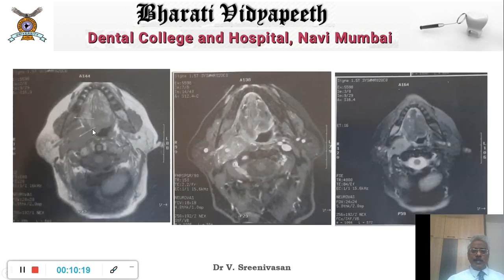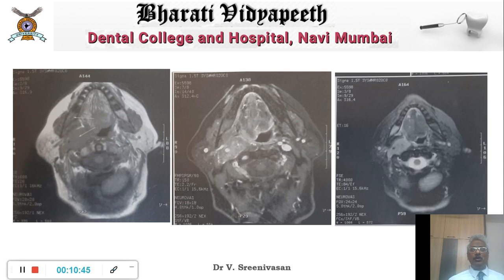Here is a T1 weighted image, a gadolinium-enhanced T1 weighted image, and a T2 weighted image. You can see that in all of them the tooth is black and the pulp spaces are white — again a paradigm shift. MRI interpretation becomes distinctly difficult because you need to reorient your thinking. You have to see whether it is a T1 weighted image, T2 weighted image, or proton density image, and then draw your interpretation.